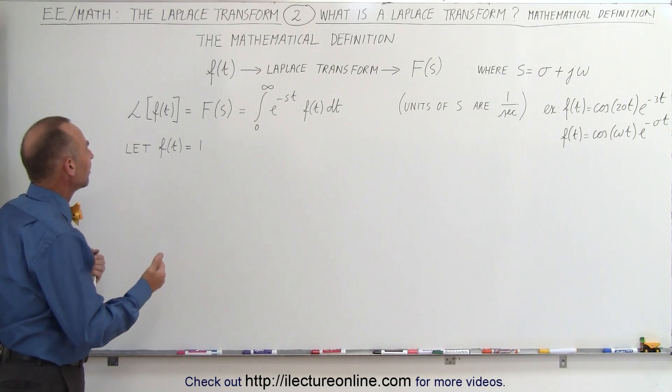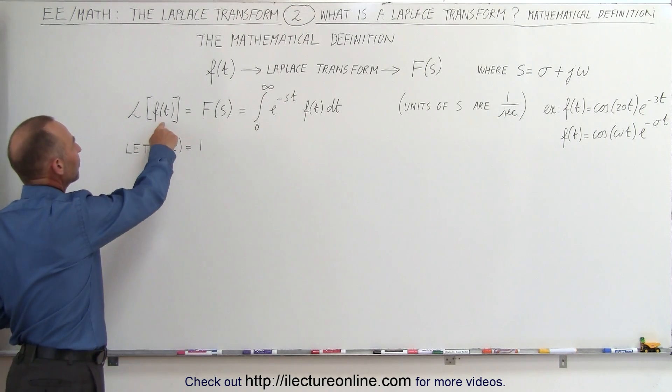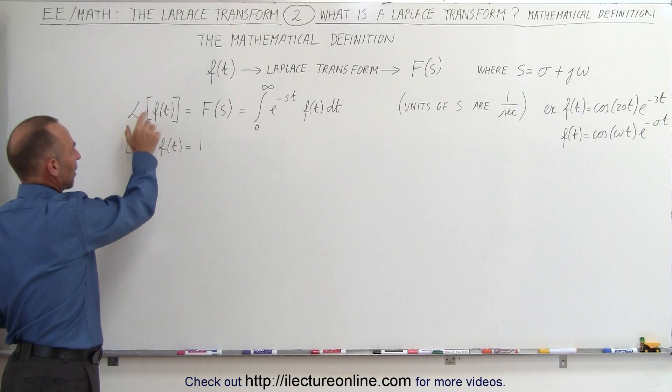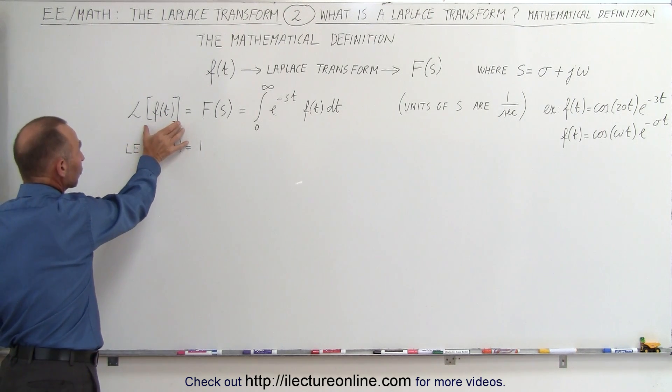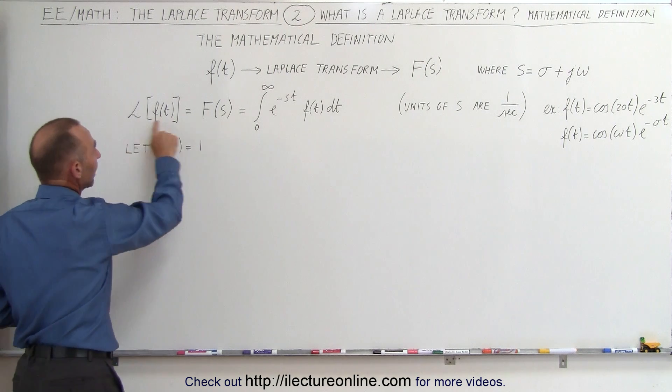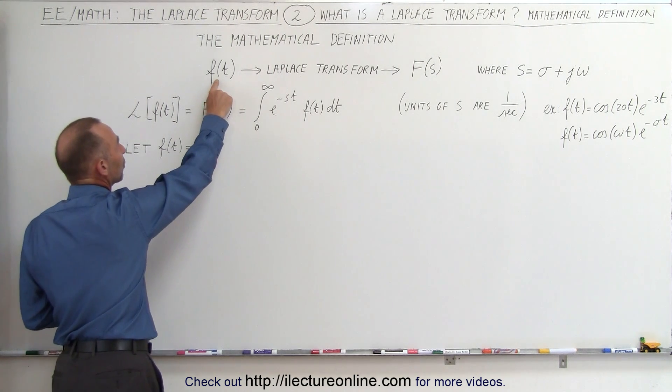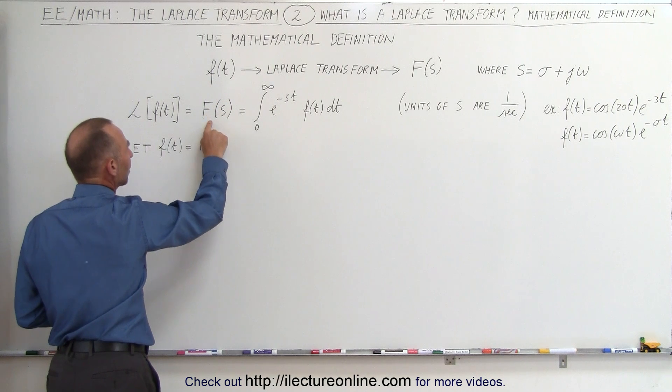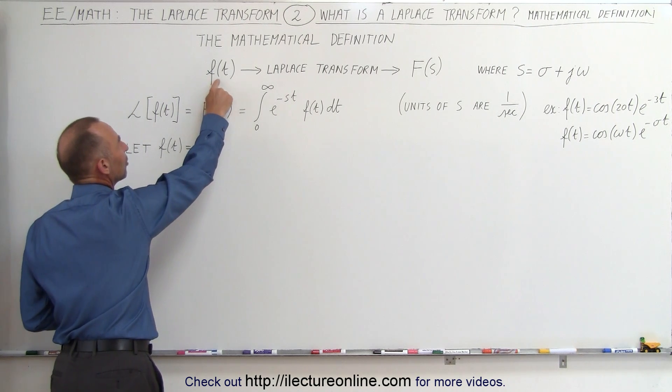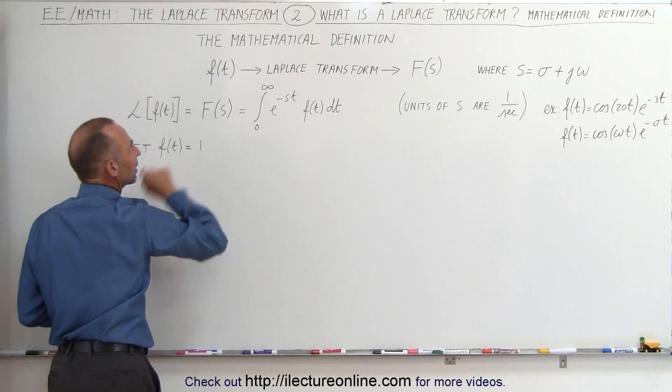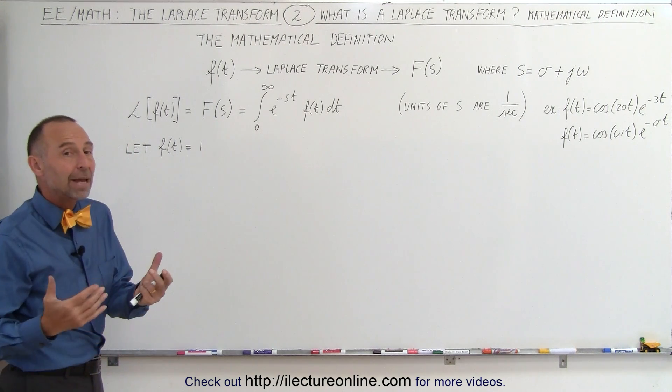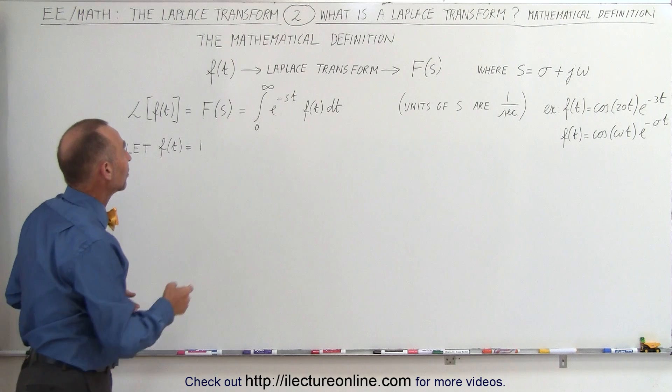Let's say that we have a simple function f of t, and we want to take the Laplace transform of that. This is how we write that. We write the letter L of the function here, and we can also write it like this. Remember, we take a function with a small f and convert it to a function with a capital F. This means it's the function in the time domain.